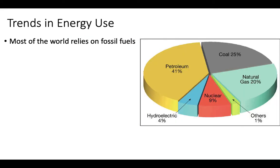In terms of global energy trends, most of the world relies on fossil fuels. About 41% of global energy is petroleum or oil — much of that for transportation. Coal accounts for another 25%, mostly for electricity generation, and natural gas is another 20%. That's close to 86% of global energy usage coming from fossil fuels, which is a problem not only because they produce CO2, but also because they pollute the air with other harmful particles.